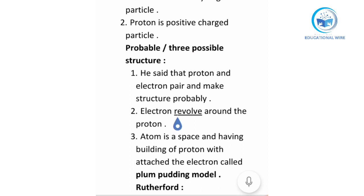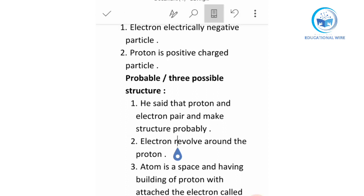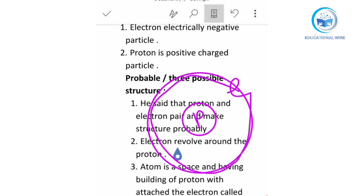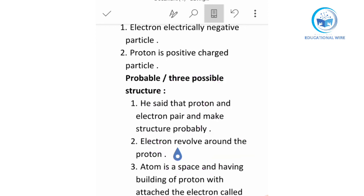Electron is revolving around the proton. But electron revolving around the nucleus, so he didn't give the name of nucleus. He just said about the proton. This is the proton and he's saying electron is just revolving around the proton.